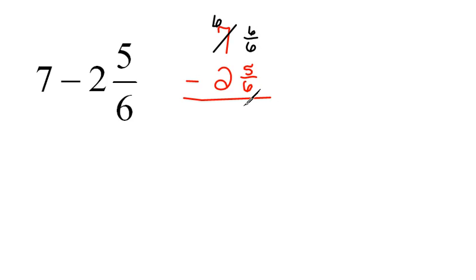Now we can do our subtraction. 6/6 minus 5/6 equals 1/6. For our whole number parts, 6 minus 2 equals 4. So our answer is 4 1/6.